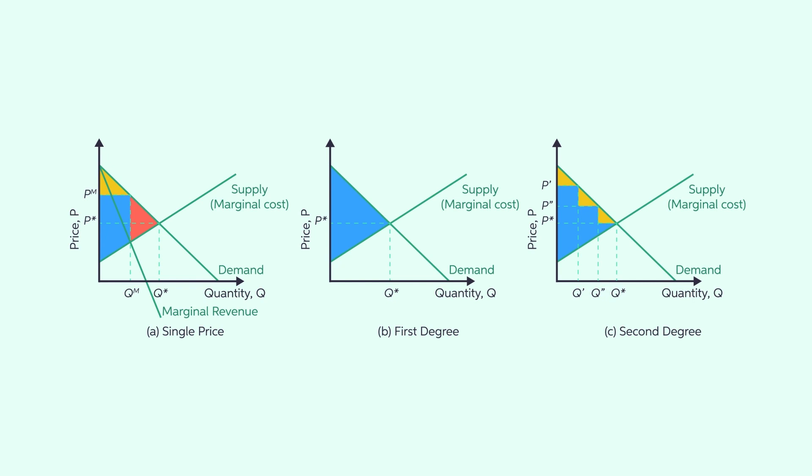Under first-degree price discrimination, consumer surplus is virtually gone. But that is a catch with the concept of efficiency. In economics, something is defined as efficient if it maximizes social surplus, the sum of producer and consumer surplus, even if distribution is arguably uneven.